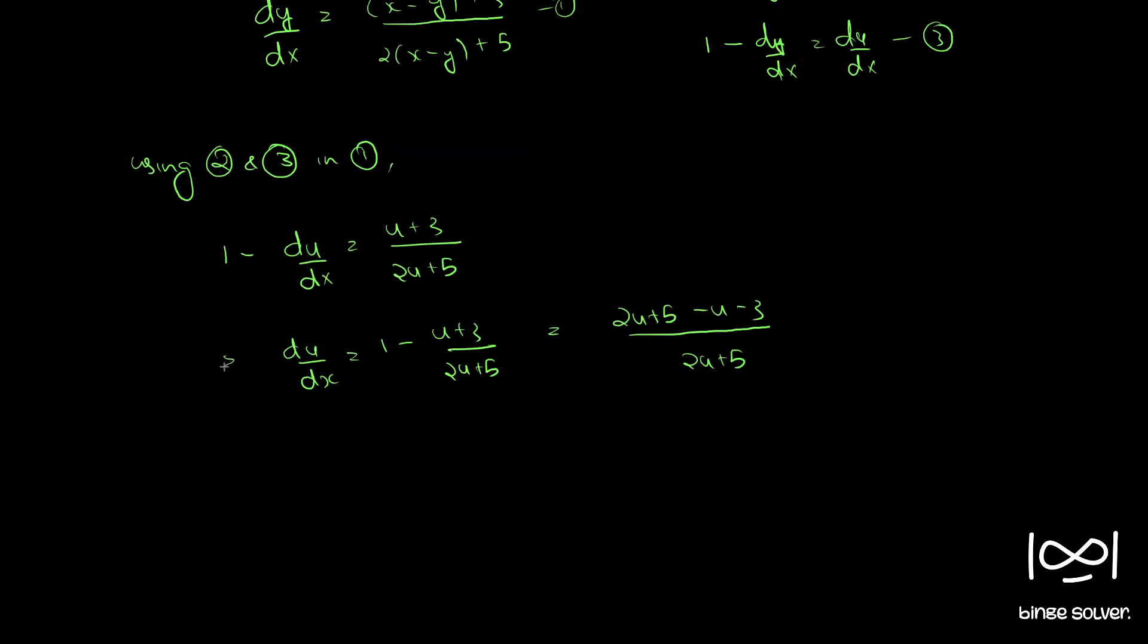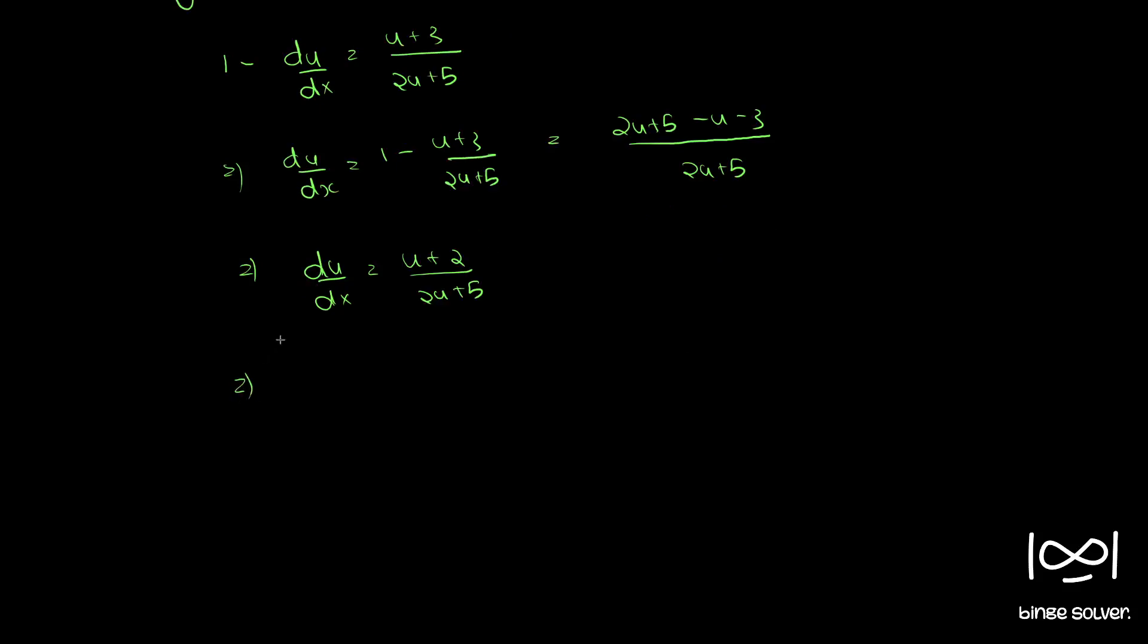Therefore, du/dx = (u + 2)/(2u + 5). Using method of separation of variables, bringing all the u terms to one side: (2u + 5)/(u + 2) du = dx.